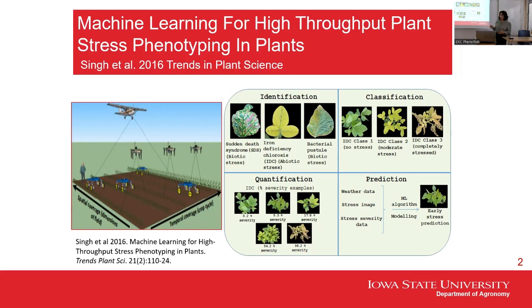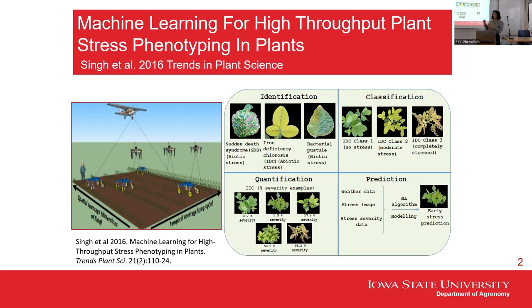Quantification is when we are interested in quantifying what the severity is. In some cases, you don't want to spray because the soil is deficient, but maybe it's a disease and we want to spray fungicide — to mitigate the stress by spraying insecticide. Prediction is when we have a trained algorithm that can identify, classify, and quantify using historical and weather data to predict that a stress might come in the future.